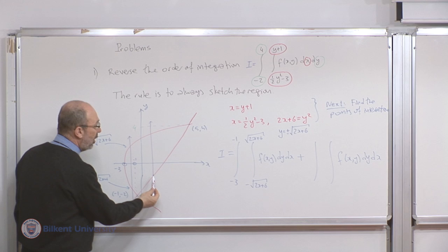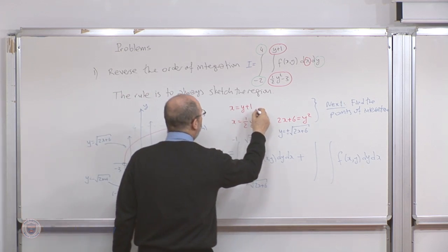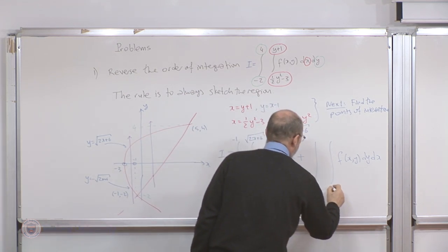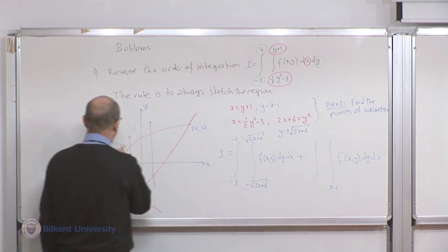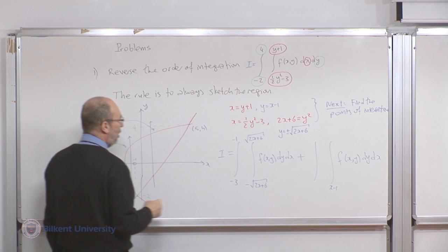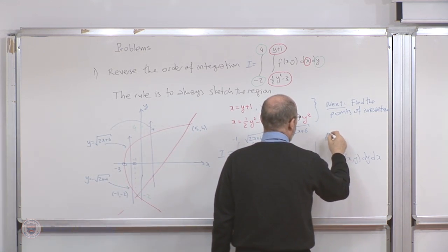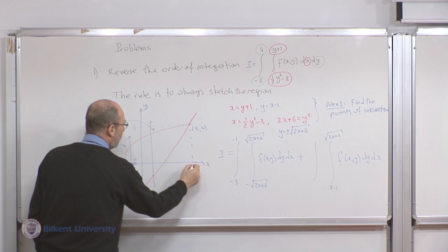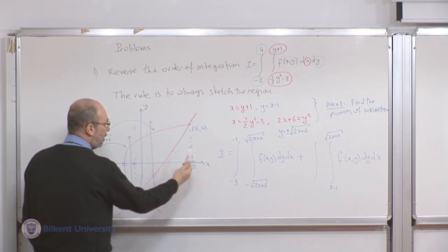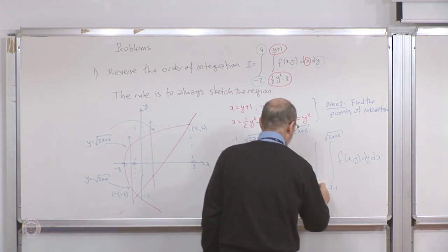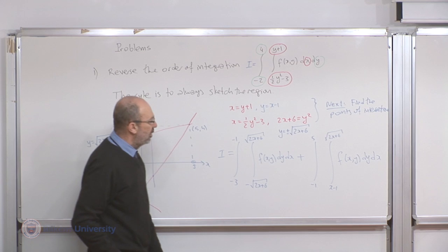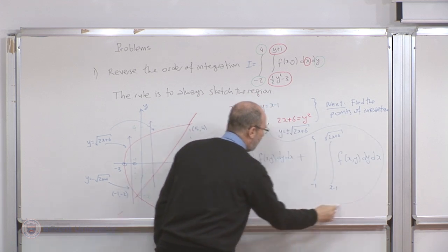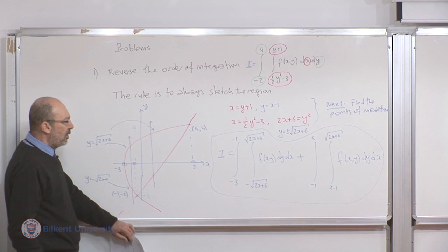The first integral: integrate f(x,y) dy dx from y equals minus square root of (2x+6) to plus square root of (2x+6), and x goes from minus 3 to minus 1. The second part: the arrow enters the region where y equals x minus 1, leaves along y equals square root of (2x+6), and this is valid from x equals minus 1 to x equals 5.